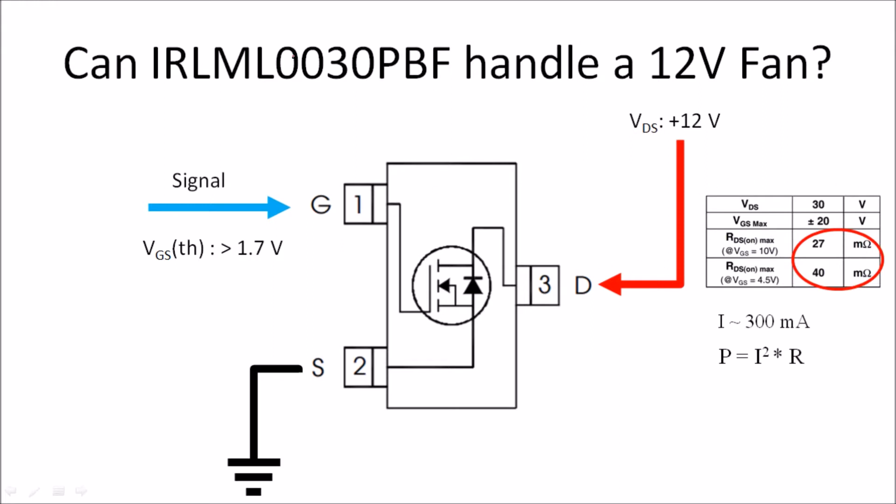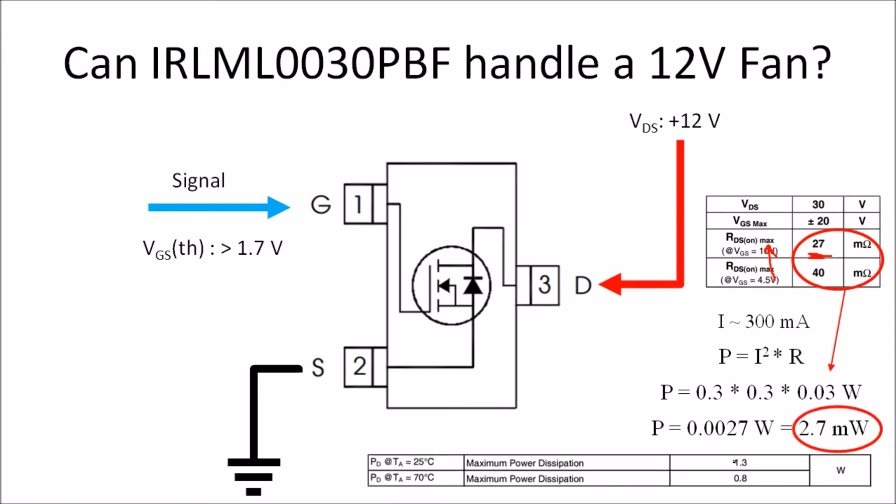We can look back at the data sheet for this particular MOSFET and it says for 10 volt signal it gives a resistance value of somewhere around 27 milliohms. The higher the voltage, the lower the resistance. So around, let's assume that at 12 volts it's somewhere around 30 milliohms. So let's substitute that value. The power equals I squared times R, so it's somewhere around 2.7 milliwatts. Now if we compare this to the maximum power dissipation for this MOSFET, it's around 1.3 watts at room temperature. So this means that this can easily handle turning on this fan at 12 volts while the fan consumes 0.3 amperes of current.